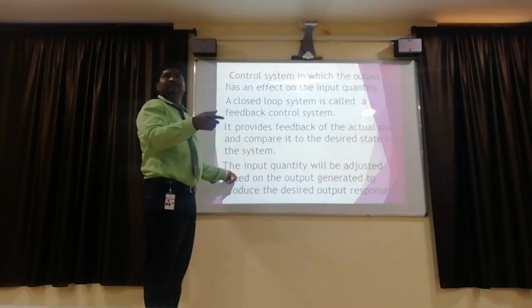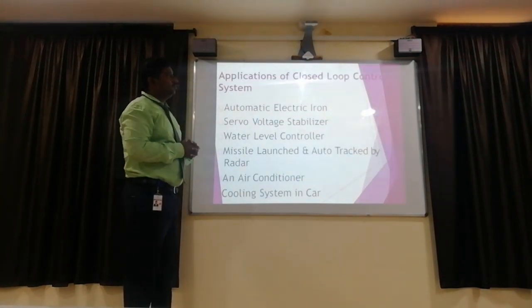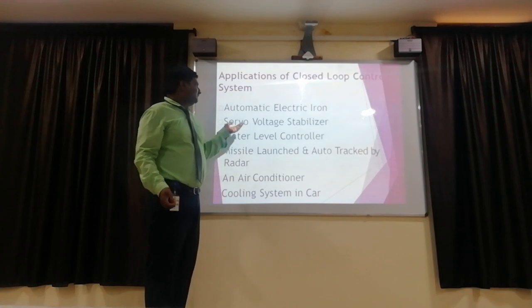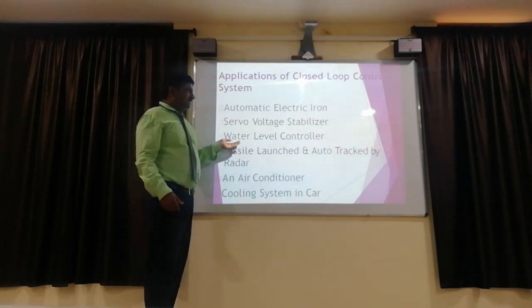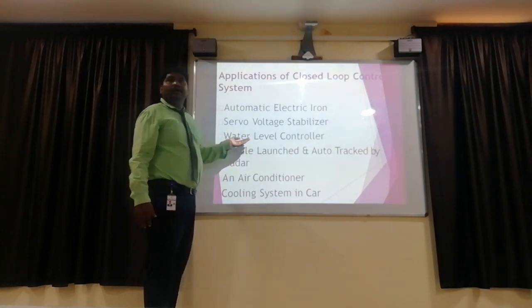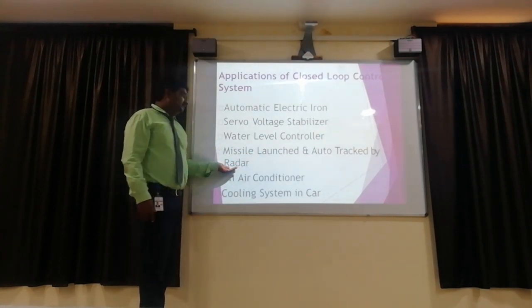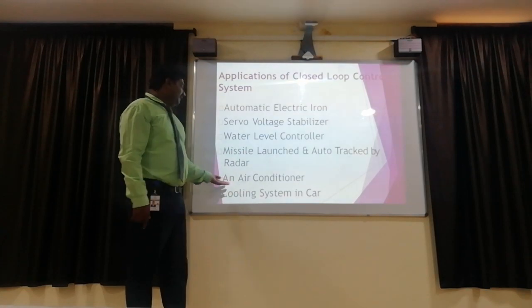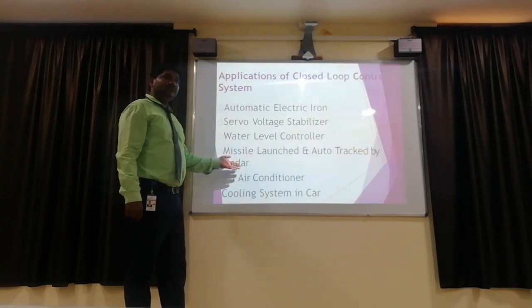Applications of the closed loop control system: automatic electric iron, servo voltage stabilizer used in our homes, water level controller, missile launching and auto-tracking by radar, and air conditioning cooling systems. These are the applications of the closed loop control system.